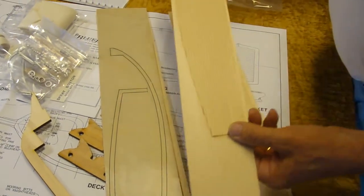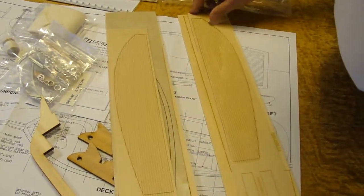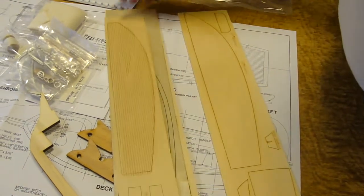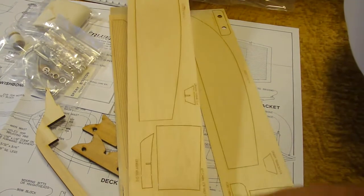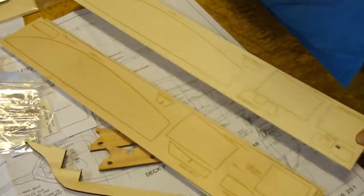Here is laser-cut decking material. And the sub-decks and pieces to make the cabin hatches.